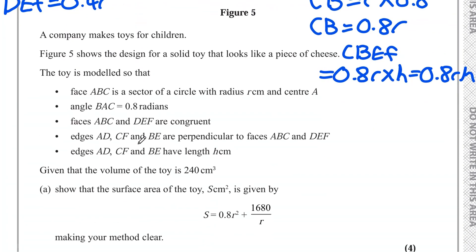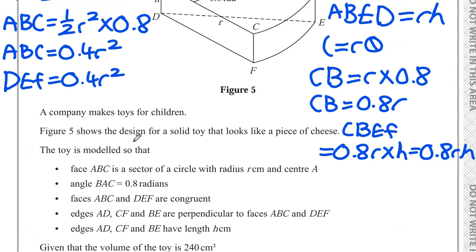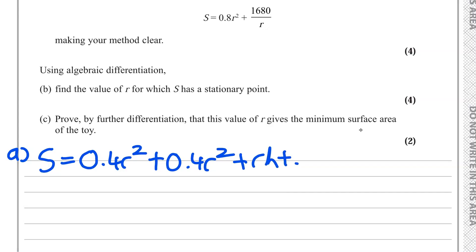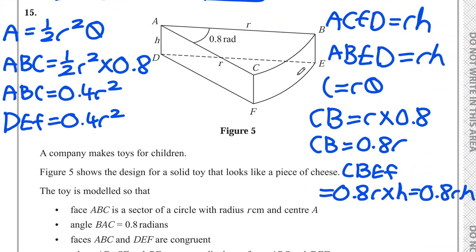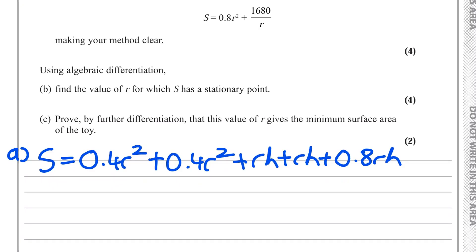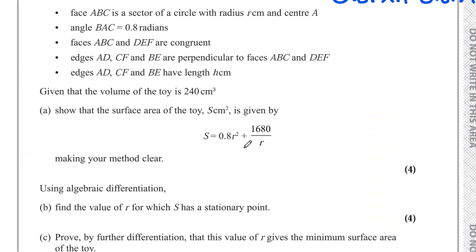Putting the formula for S together: S equals ABC plus DEF plus the two rectangles plus the curved face, so S equals 0.4R squared plus 0.4R squared plus RH plus RH plus 0.8RH. Simplifying: 0.4R squared plus 0.4R squared gives 0.8R squared, and RH plus RH plus 0.8RH gives 2.8RH, so S equals 0.8R squared plus 2.8RH.